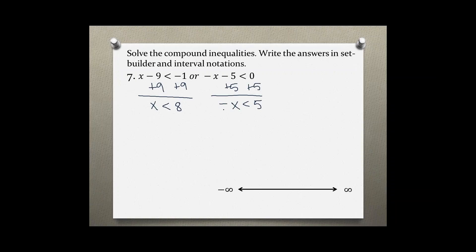But we need positive x. So if we multiply or divide both sides by negative one, we get positive x, but we must always flip the inequality sign. X is greater than negative five.